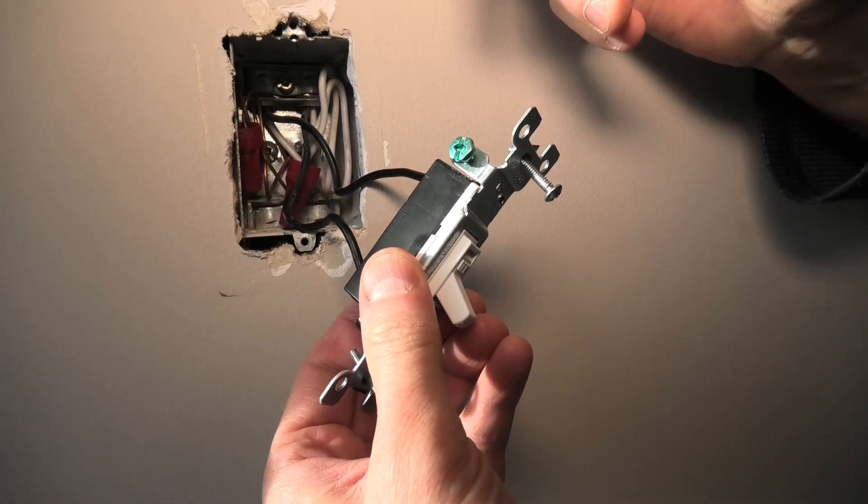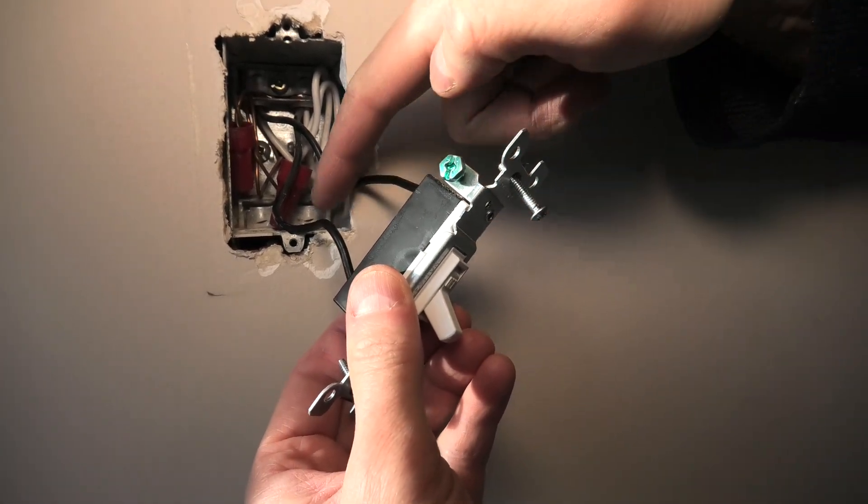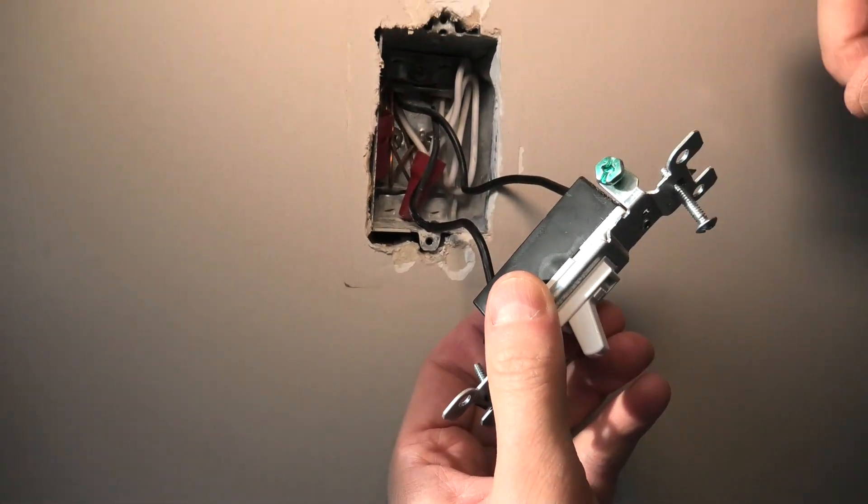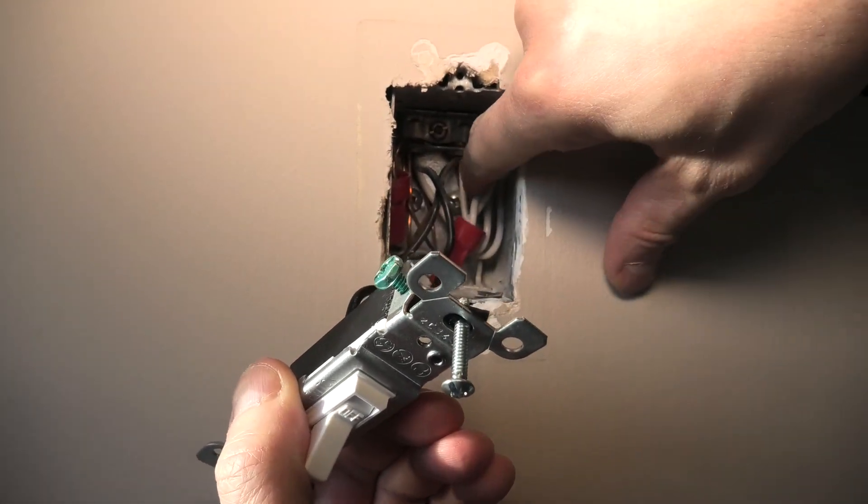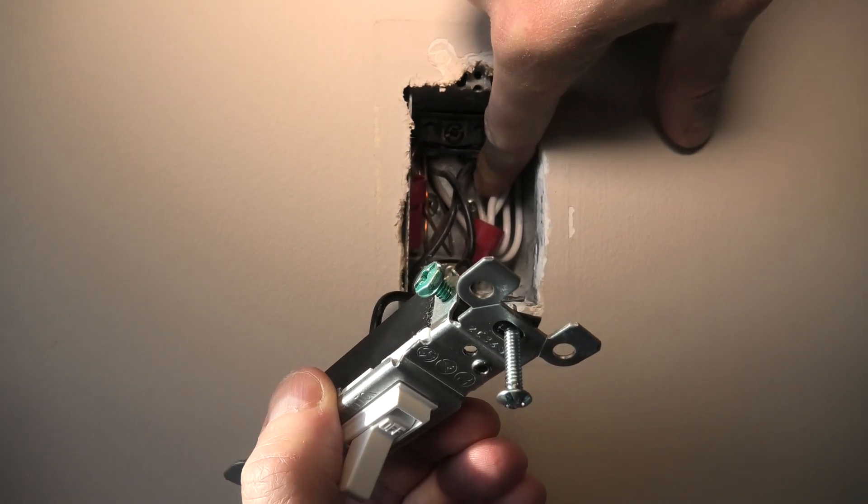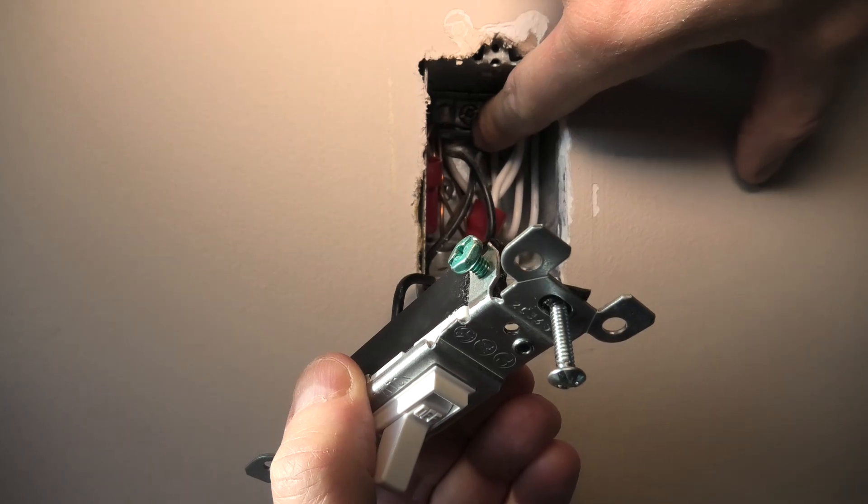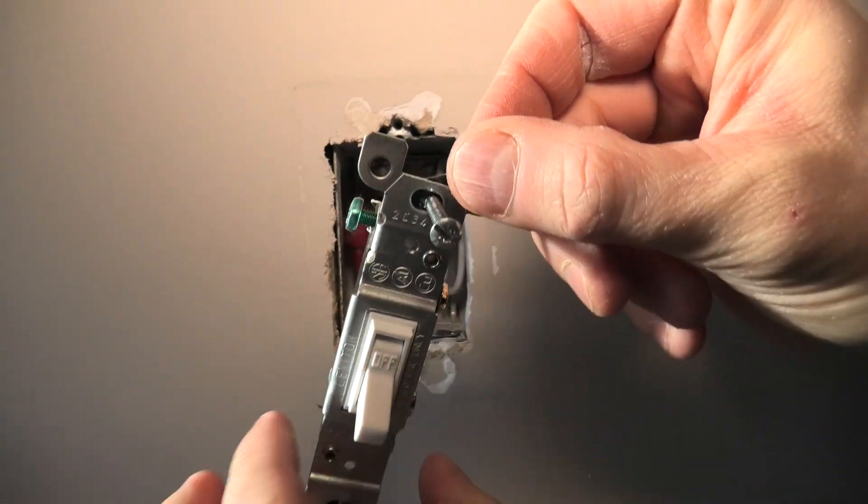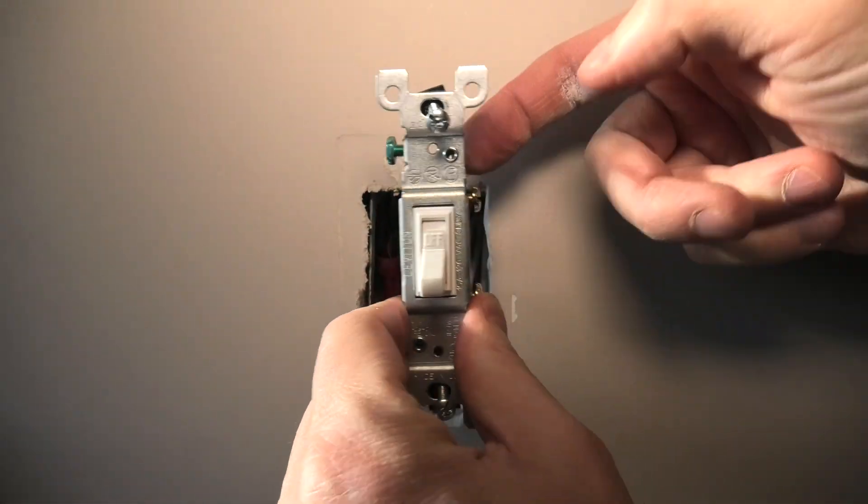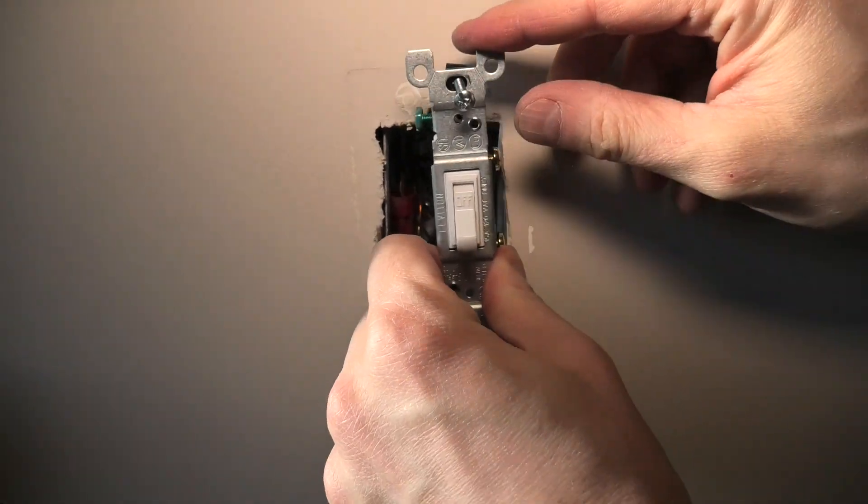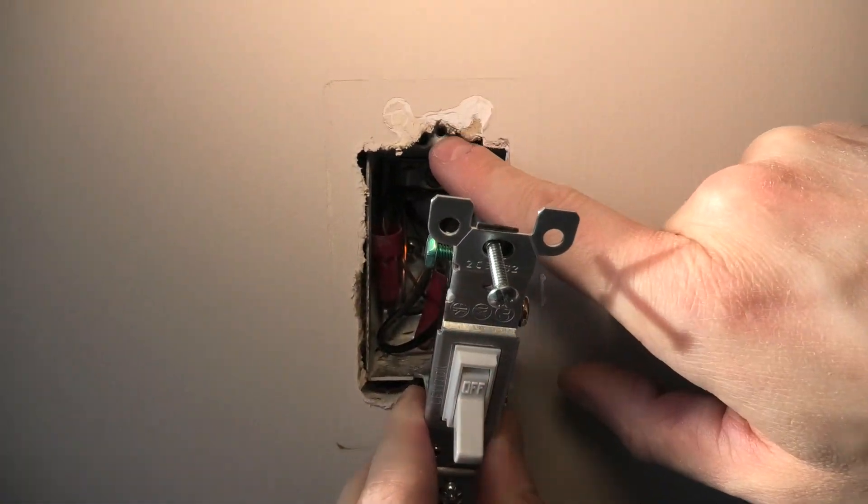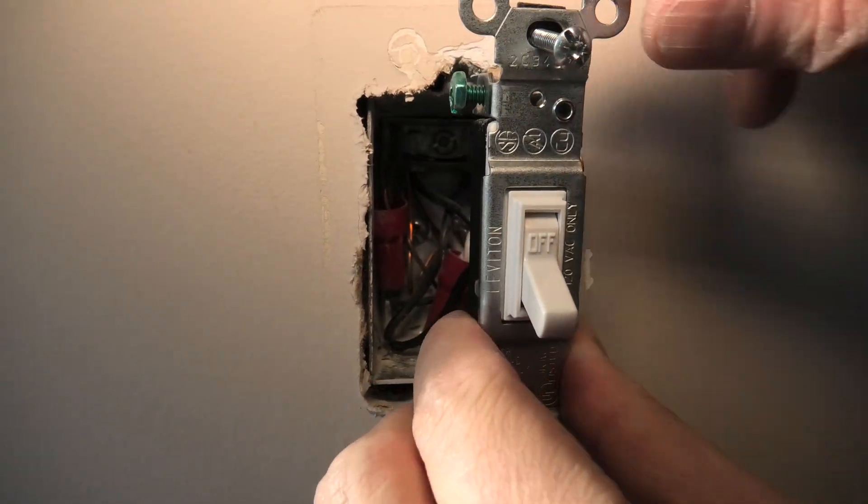In this case, the reason for that is we have a metallic box which is already grounded to that screw over there. You can see the bare wire connected to the screw. This means that the box is grounded, and once we install the switch it will actually touch the box and will be grounded this way.